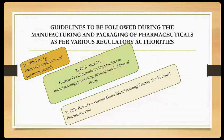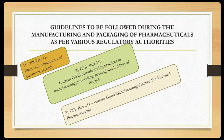21 CFR Part 210 and Part 211: Part 210 covers current good manufacturing practices (CGMP) related to the manufacturing, processing, packing, and holding of drugs. These are called bulk products. 21 CFR Part 210 deals with bulk drug manufacturing — if CGMP rules apply, you follow 21 CFR Part 210.